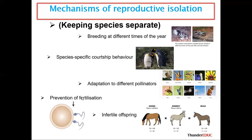Lastly, prevention of fertilization. We have different kinds of sperm and ova, so fertilization will not take place between different species. For example, the egg of a human and the egg of a bird are totally different — humans are big but their eggs are small, while birds are small but their eggs are big. So there is no way they can reproduce together.